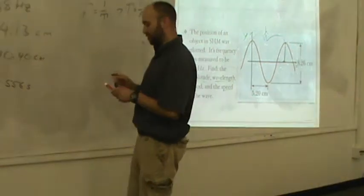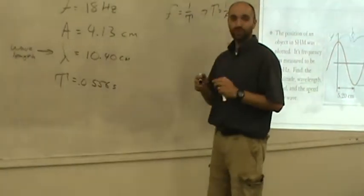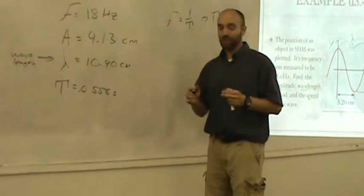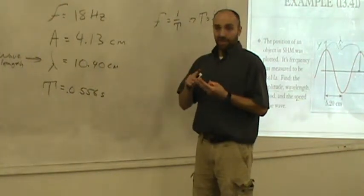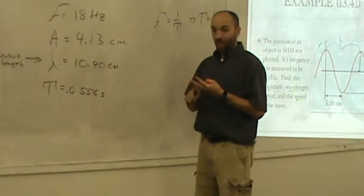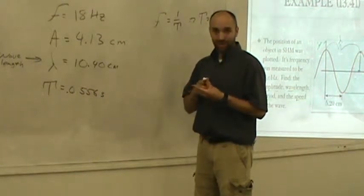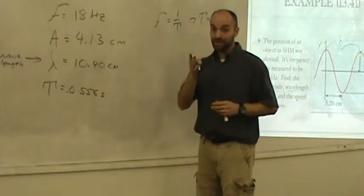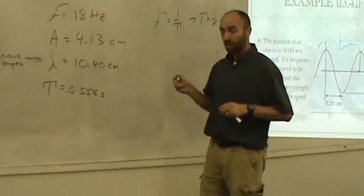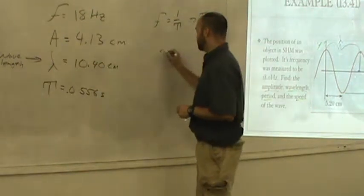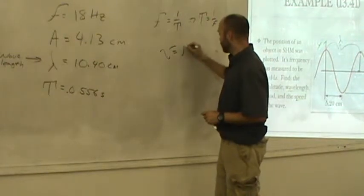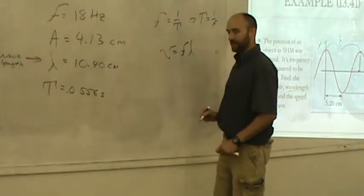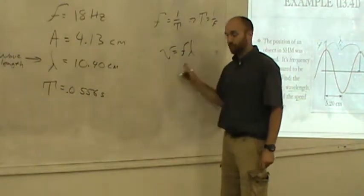Well, there's one equation that I haven't given you yet. And you need to know it. And you just need to memorize it. And this holds true for all waves. Whether we're talking about sound waves, water waves, light waves, waves on a spring, waves on a string, you name it. If it's a wave, this equation applies. It always, always works. The speed of a wave is always equal to the frequency times the wavelength. Always. This works every time.